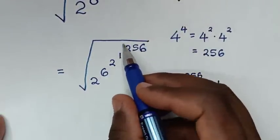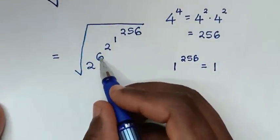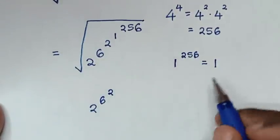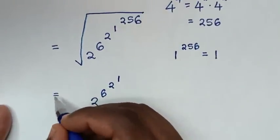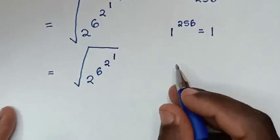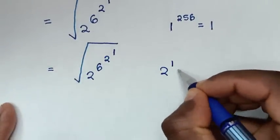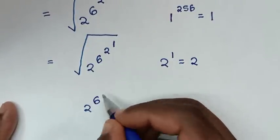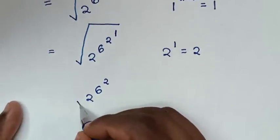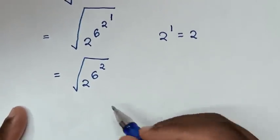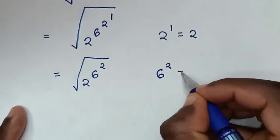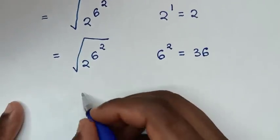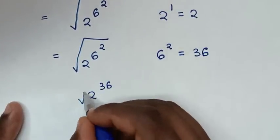So 1 power of 256 is 1. Then it will be 2 power of 6 power of 2, and this 1 power of 256 becomes 1, all under the square root. In the next step, we substitute: 6 power of 2 is 36. So it becomes 2 power of 36, all under the square root.